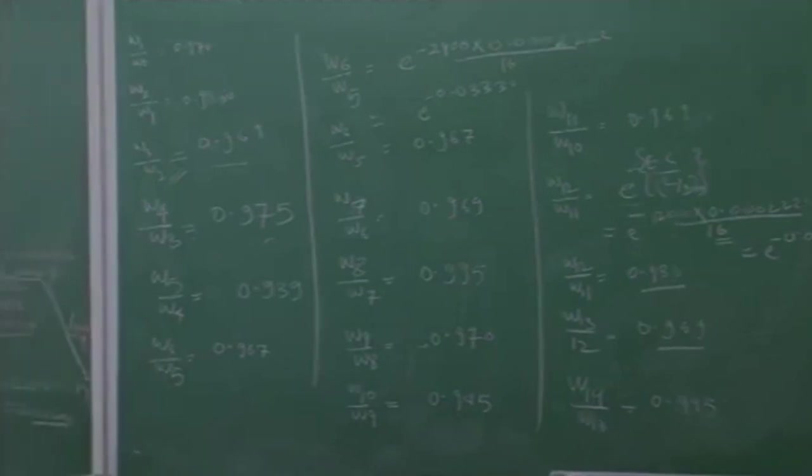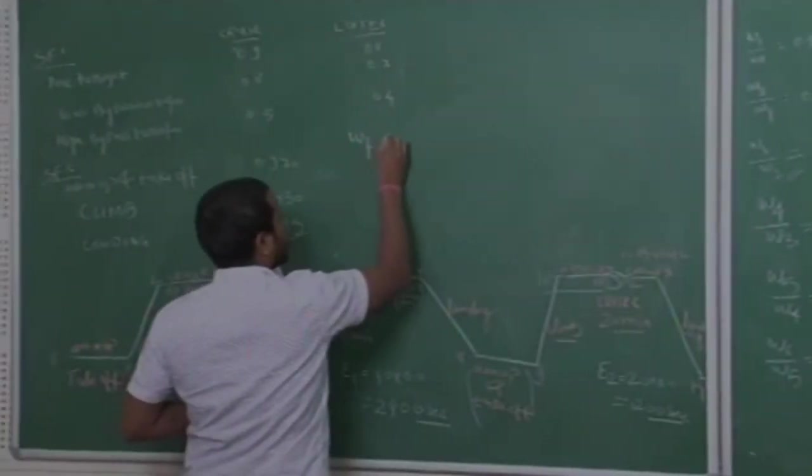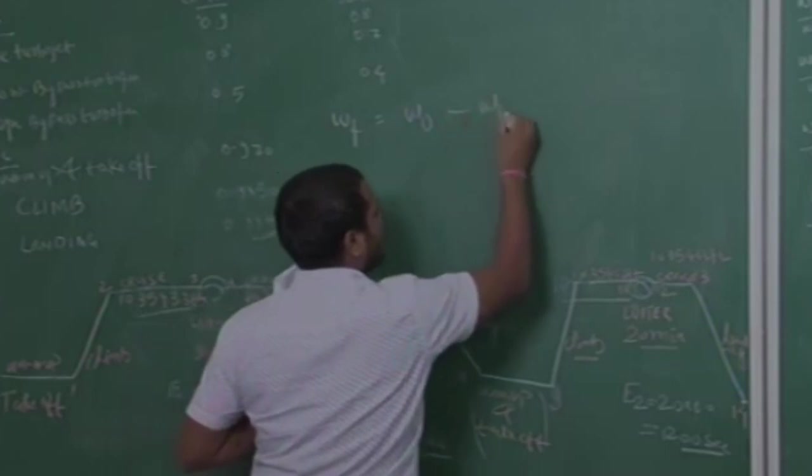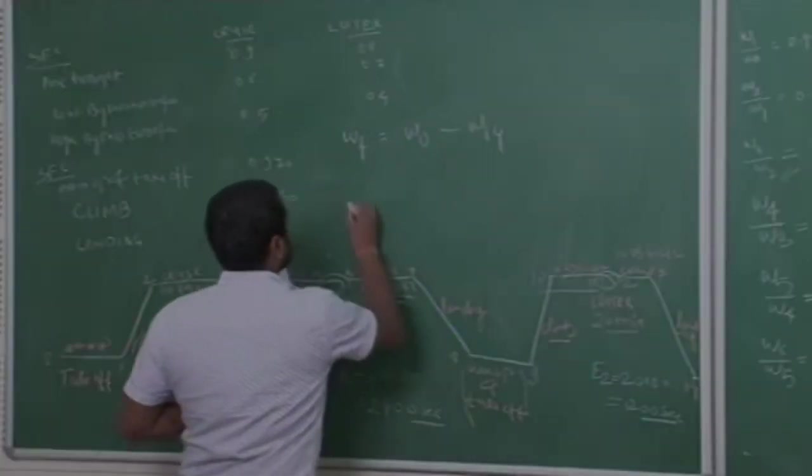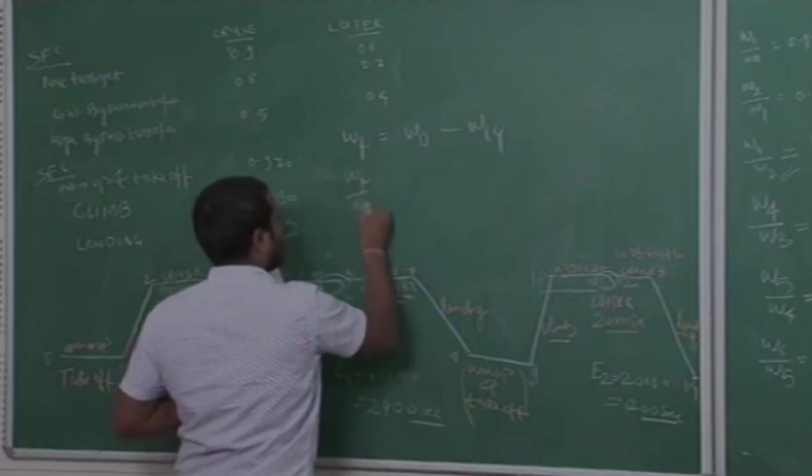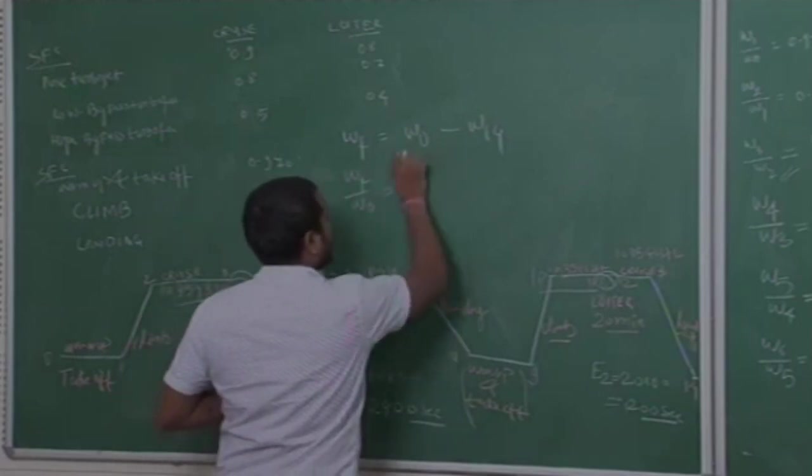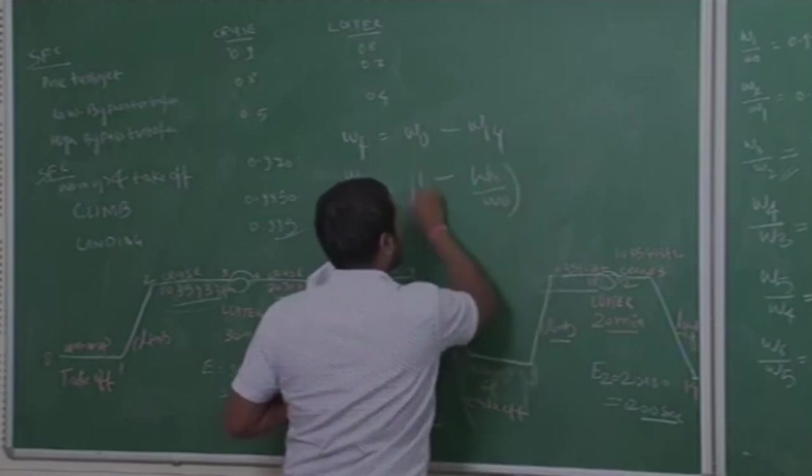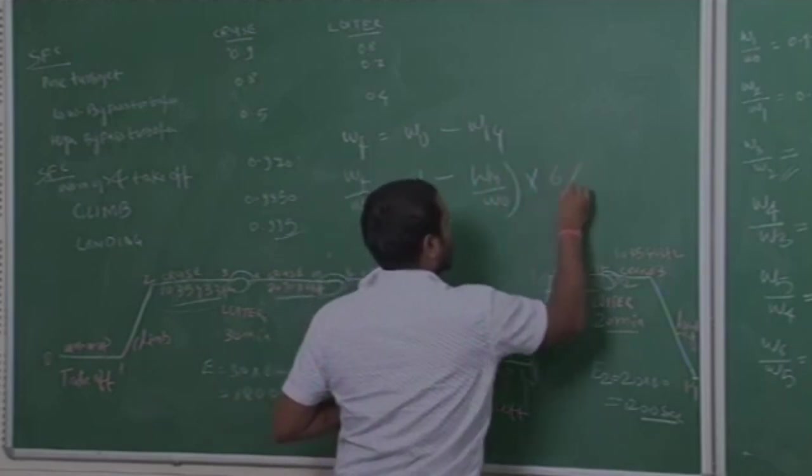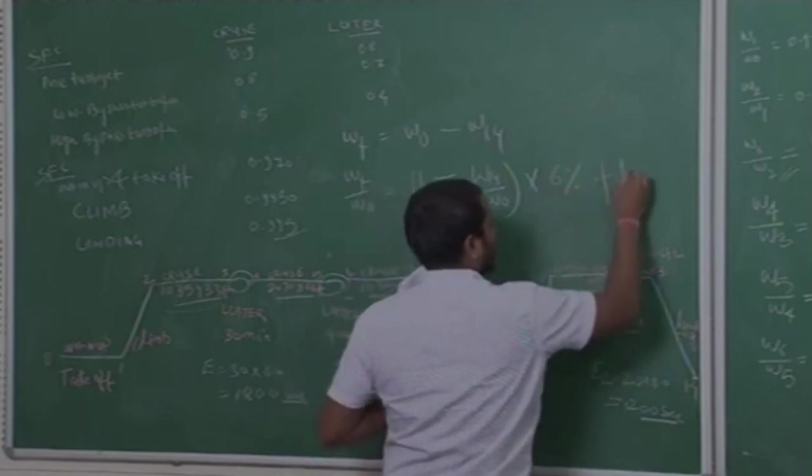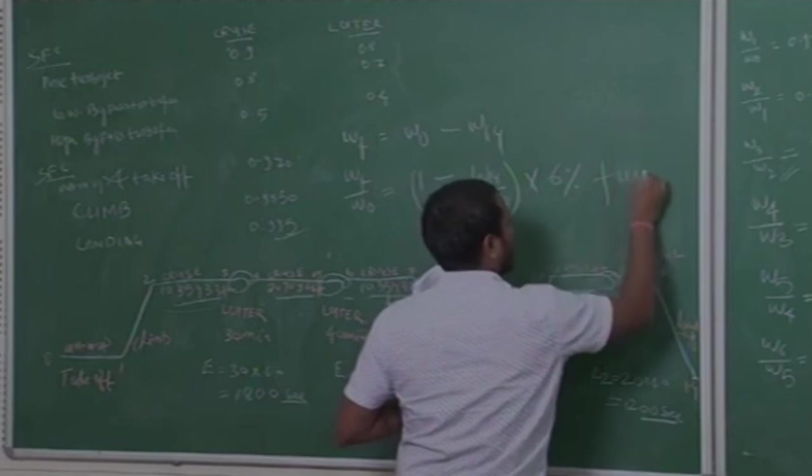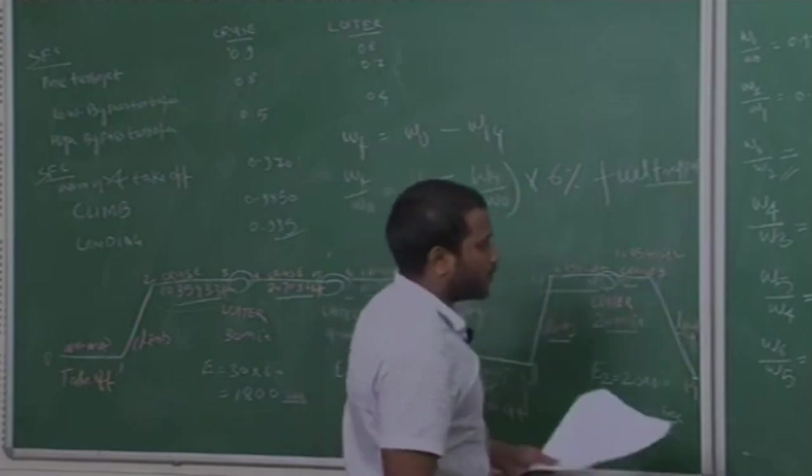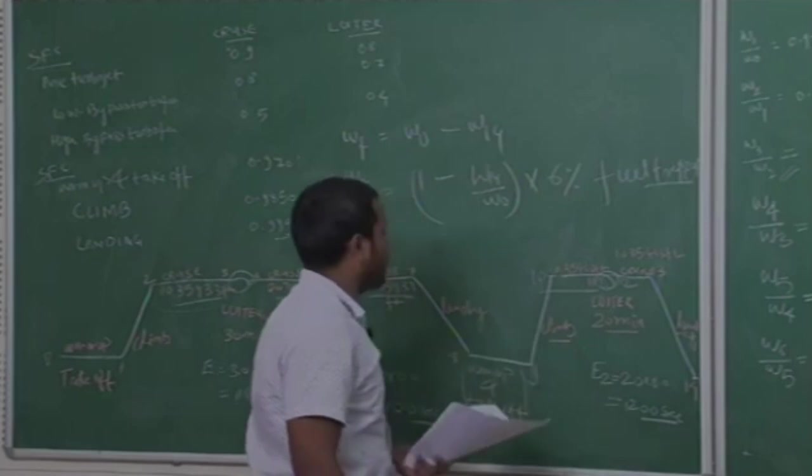We need to find the Wf by W naught. Wf is equal to, final weight is equal to initial minus final that is 14. So Wf by W naught is 1 minus W14 by W naught into 6 percent fuel trapped.